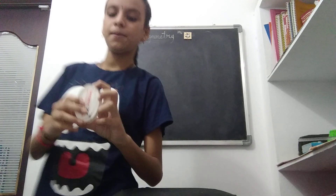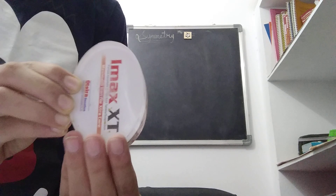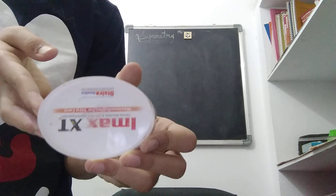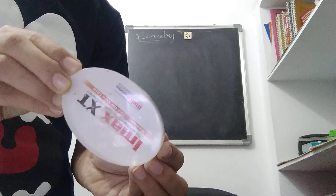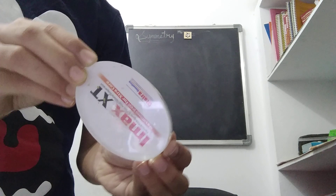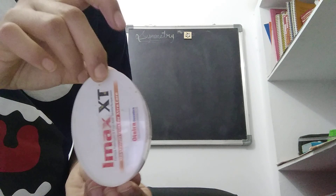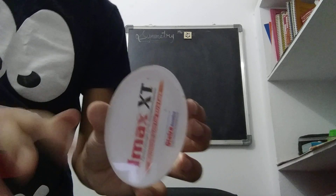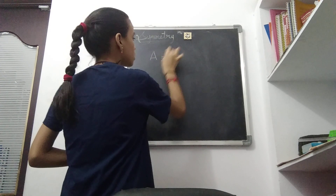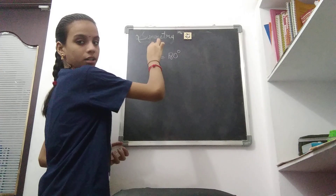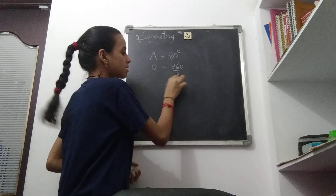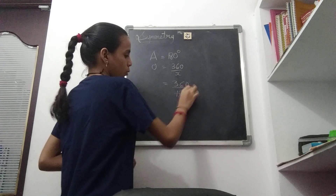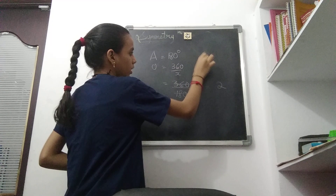Let us take this paperweight as another example. The paperweight is placed in this position. If it is rotated 90 degrees, it doesn't have the same shape as before. If rotated 180 degrees, you get the same shape as before. So the angle of rotation is 180 degrees, and the order equals 360 divided by 180, which gives us 2. The order of rotation is 2.